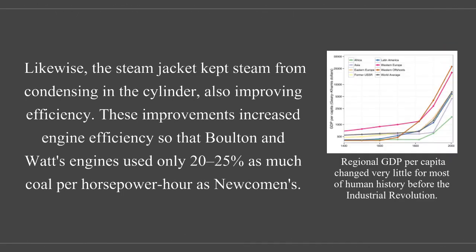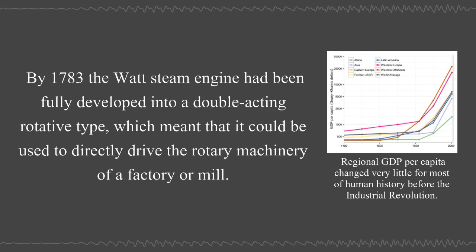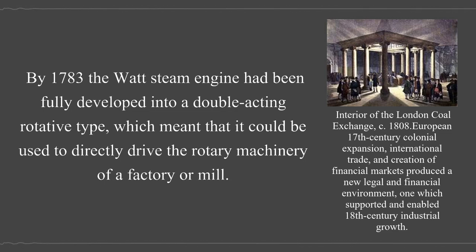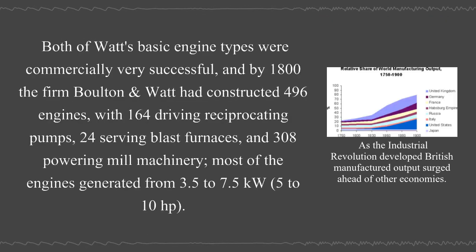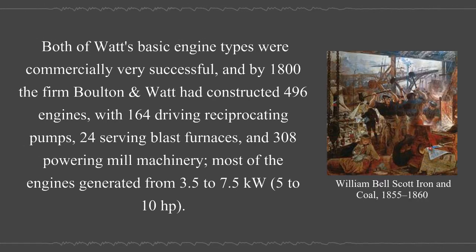Bolton and Watt opened the Soho foundry for the manufacture of such engines in 1795. By 1783, the Watt steam engine had been fully developed into a double-acting rotative type, which meant that it could be used to directly drive the rotary machinery of a factory or mill. By 1800, the firm Bolton Watt had constructed 496 engines, with 164 driving reciprocating pumps, 24 serving blast furnaces, and 308 powering mill machinery.